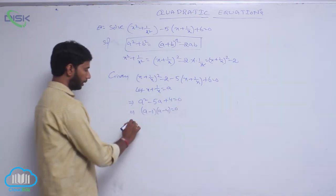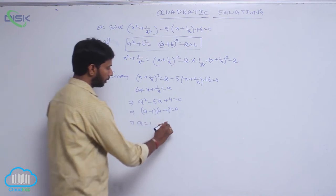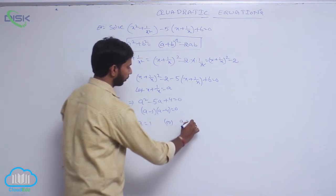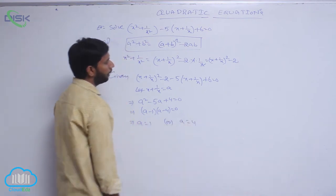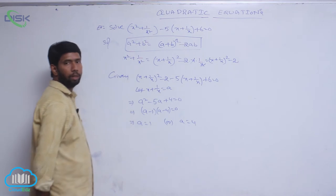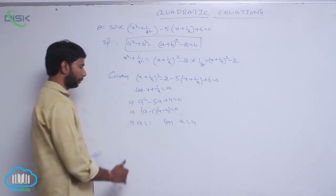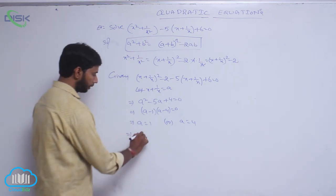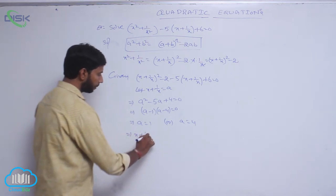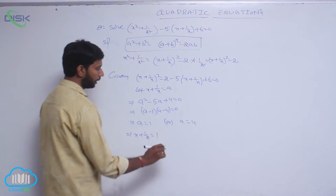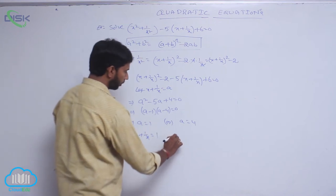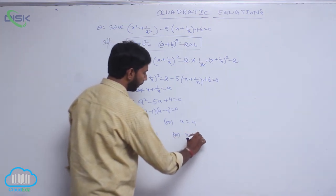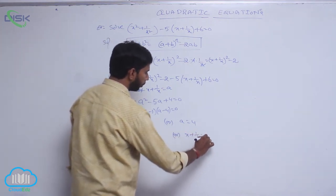That implies a equal to 1 or a equal to 4. Substituting back: x plus 1 by x equal to 1 or x plus 1 by x equal to 4.